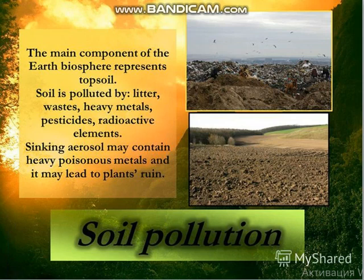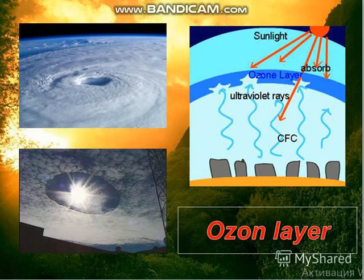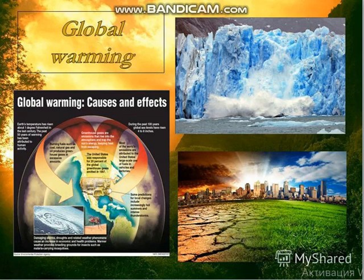Soil pollution — the main component of the Earth's biosphere is topsoil. Soil is polluted by litter, water, waste, heavy metals, pesticides, and radioactive elements. We also have modern ecological problems like greenhouse effect, acid rain, ozone layer depletion, and of course global warming.